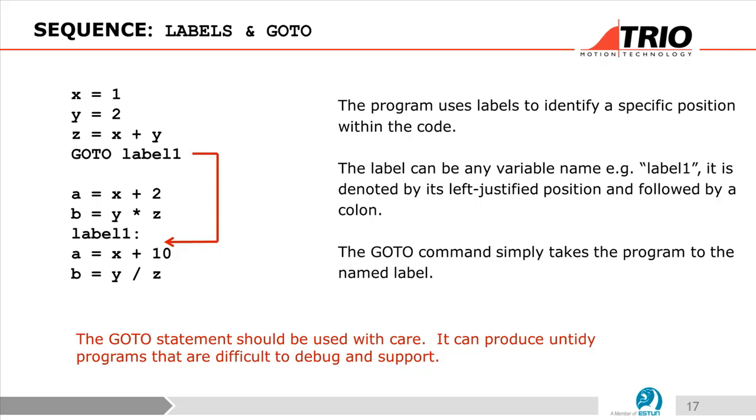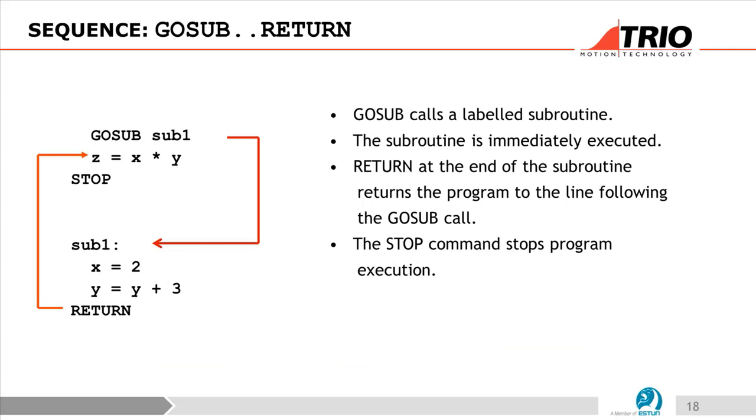GOSUB calls a label subroutine. The subroutine is immediately executed, then RETURN at the end of the subroutine gives you the following line. And the STOP command stops the program execution.